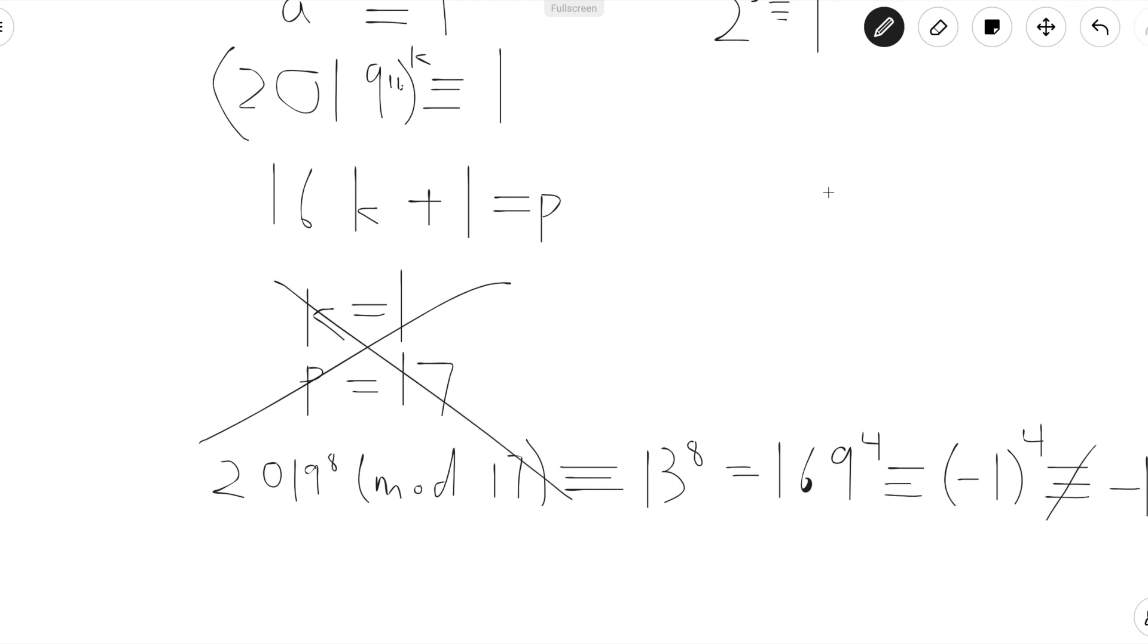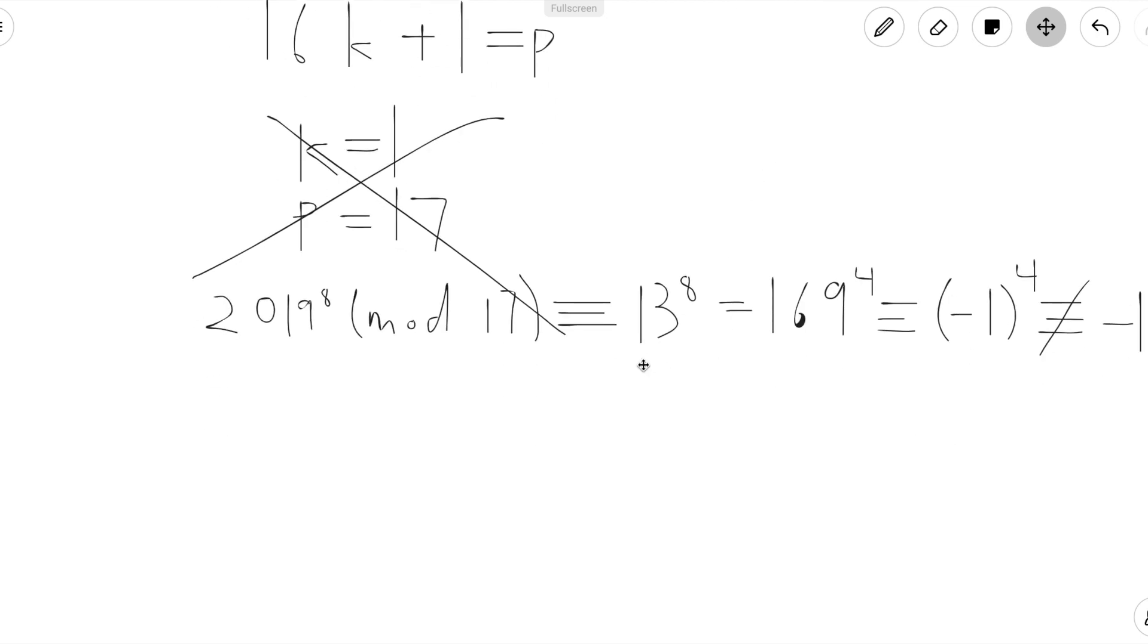Now let's check k equals 2. Well, if k equals 2, p equals 33, which isn't a prime, so we don't have to check that. And when k equals 3, p is 49, which also isn't a prime. And this goes all the way until k equals 6, which is our next prime that we need to check.